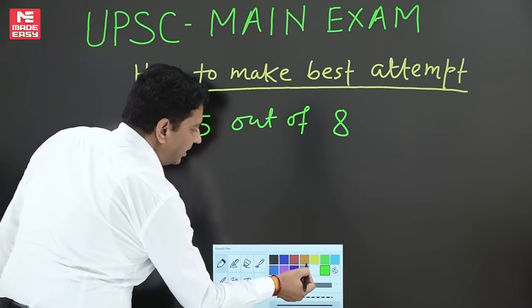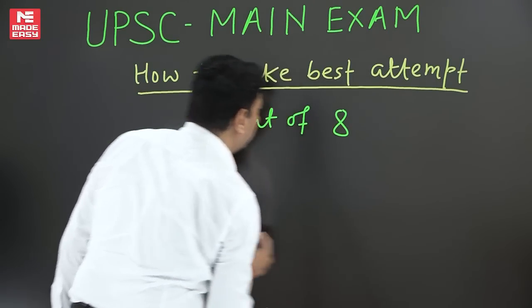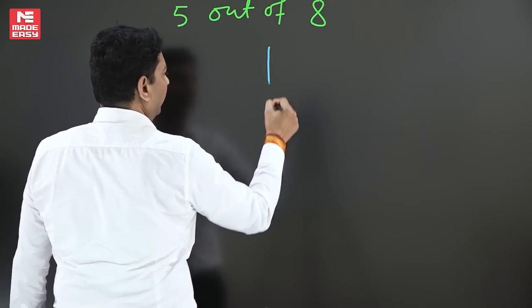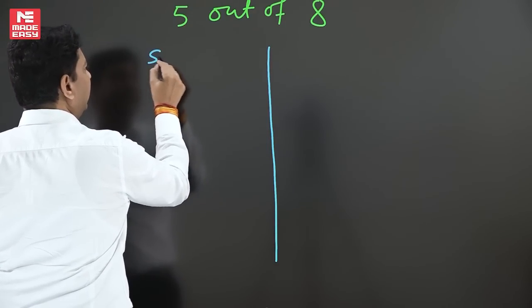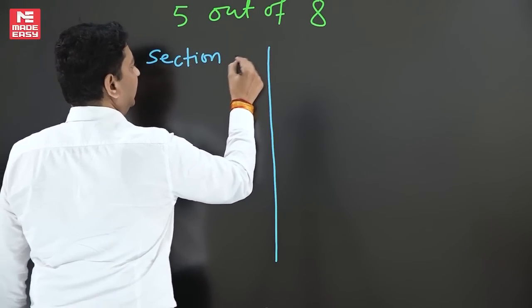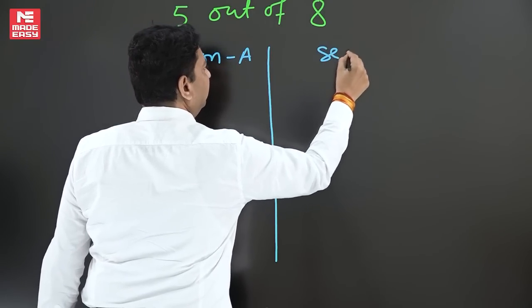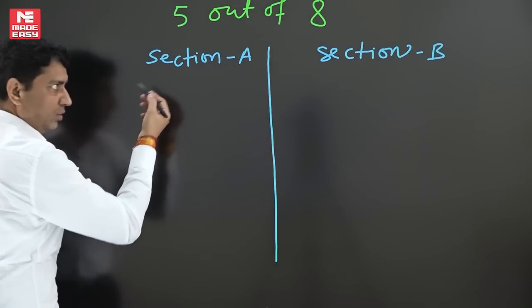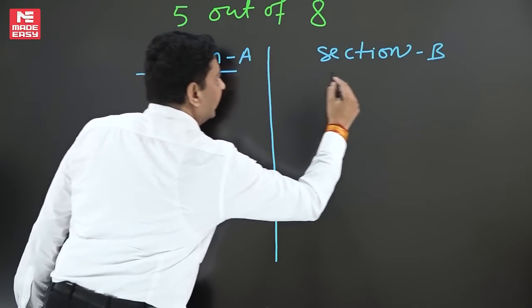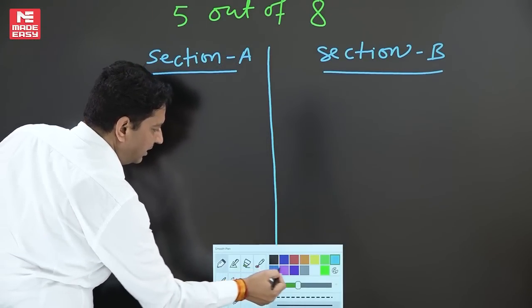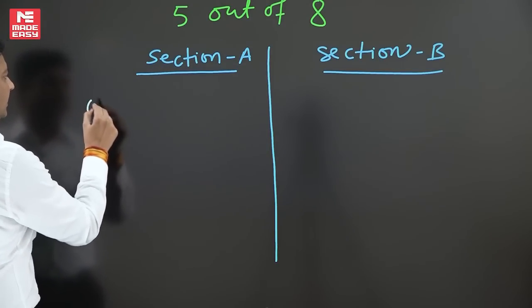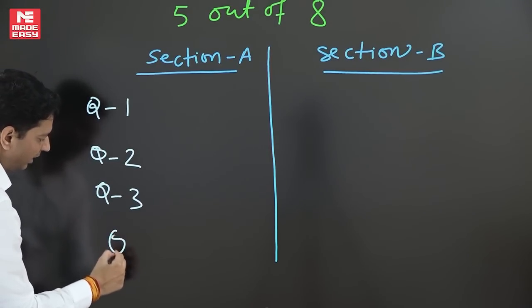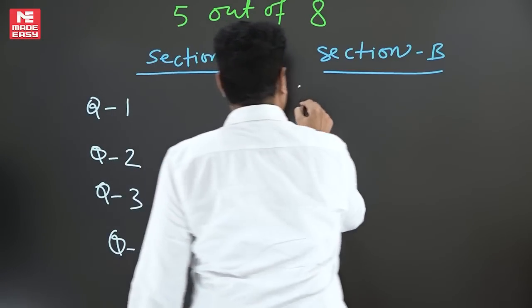These will be from the two sections. If we divide in two sections, we can take Section A and Section B. How many questions are in Section A and Section B? There will be four questions. This is question number one, question number two, question number three, question number four - these are four in Section A.